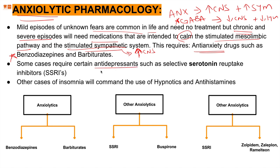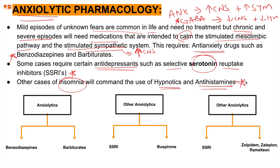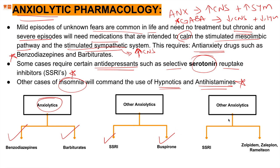Mild episodes of unknown fears are common and don't need treatment. But chronic and severe episodes require medications that calm the stimulated mesolimbic pathway and sympathetic system. These include benzodiazepines and barbiturates, and in some cases antidepressants such as SSRIs, or hypnotics and antihistamines for insomnia. Other drugs include buspirone, zolpidem, zolplon, and ramelteon — we'll take a look at all of these ahead.